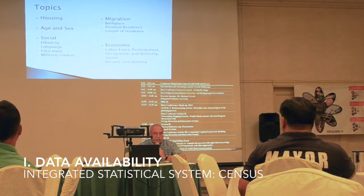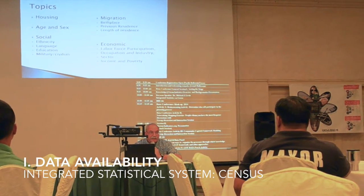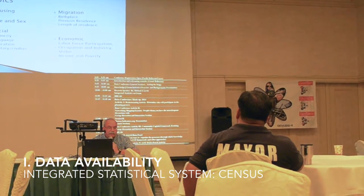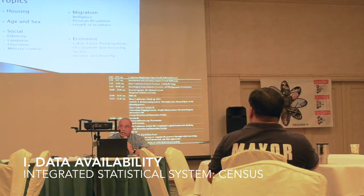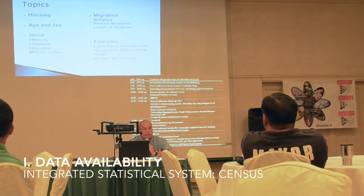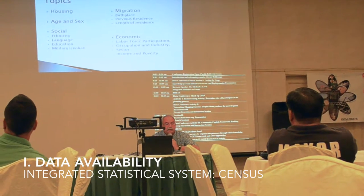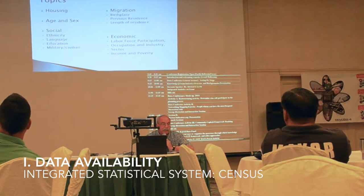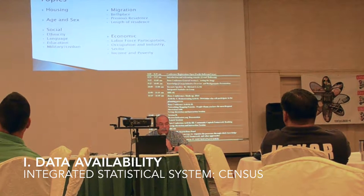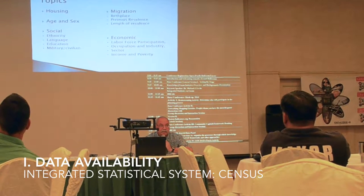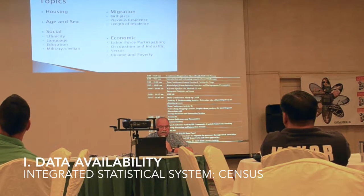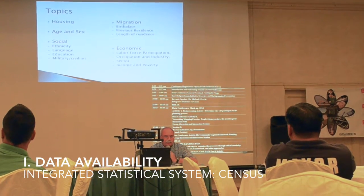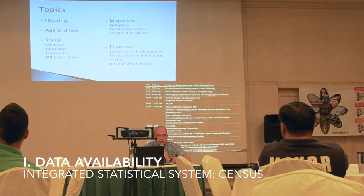These are some of the census topics — I won't go through all of them. But I will point out that if you look at the bottom of the first column, you'll see military-civilian. In terms of the military build-up, someone could cross-tabulate at the block level military versus civilian characteristics — age and sex, ethnicity, language, and so forth — including the immigrant population.